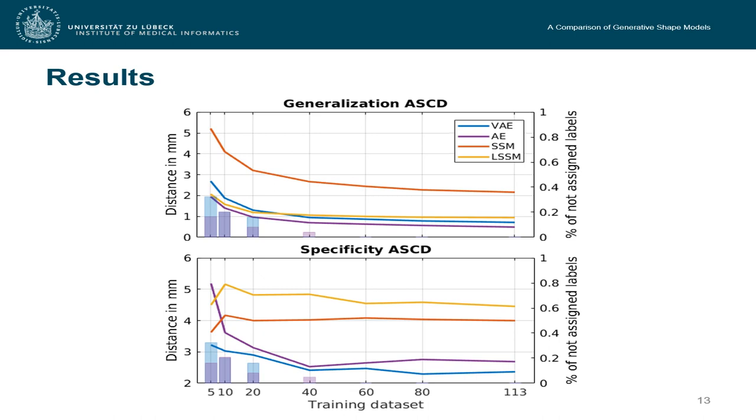So those are the results we get. On the top, we see the generalization ability and on the bottom, the specificity. The orange line describes the standard shape models. The yellow line corresponds to locality-based shape models. Variational autoencoders are described by blue and standard autoencoders by purple. So we can see that generalization ability of the standard shape models is much worse than the one of the other three methods.